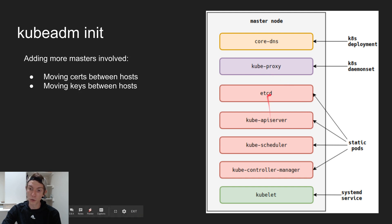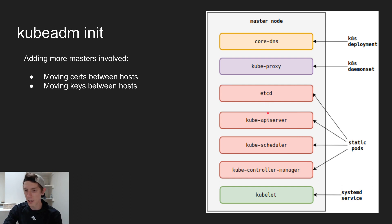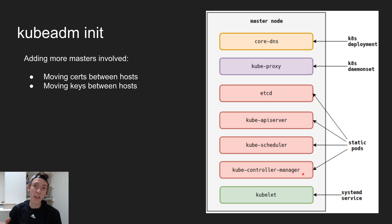When you run init, you do need to have some things on the master node already. For example, you have to have kubelet installed, KubeADM installed, a couple of system configuration things have to be in place, but that's all documented in the Kubernetes docs. If you've got all that and you run kubeadm init, it's going to start the Kubernetes control plane — the API server, the scheduler, the controller manager — as static pods. All that means is it puts them in a specific directory on the host so that when the kubelet starts up, it knows to start them as containers. It doesn't require a whole Kubernetes system to get those initial containers bootstrapped.